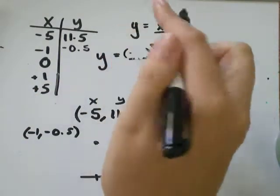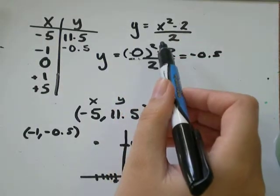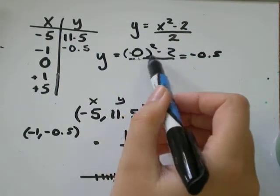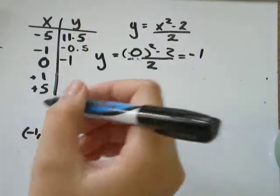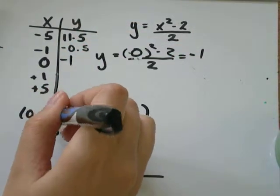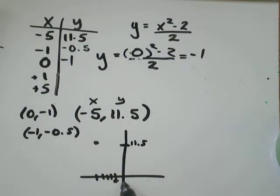We'll do the same thing with 0. So, 0 squared is 0, minus 2 is negative 2. Divided by 2 would be negative 1. So, I've got the point 0, negative 1. So, at 0, I'm at negative 1, somewhere down there.